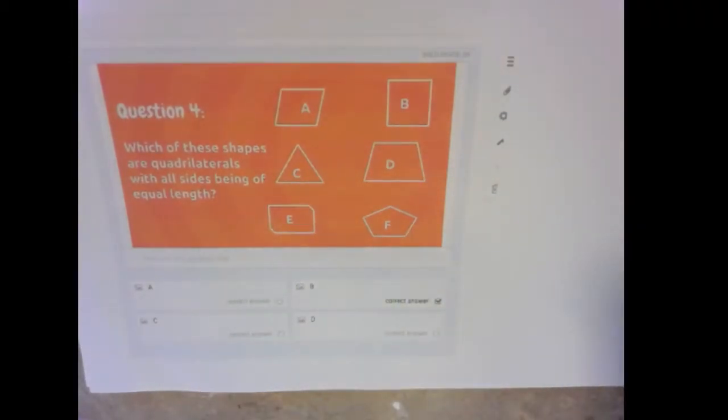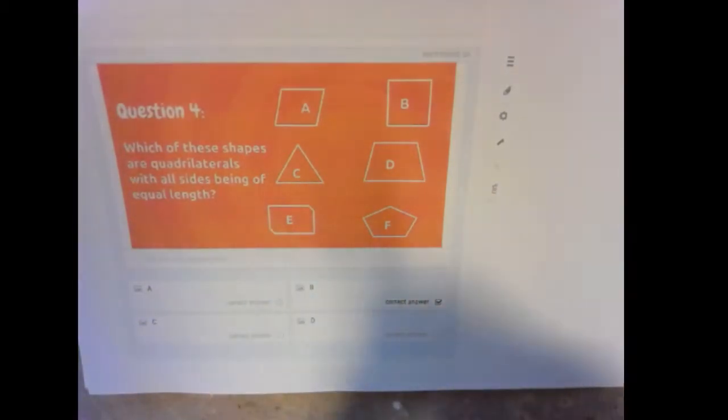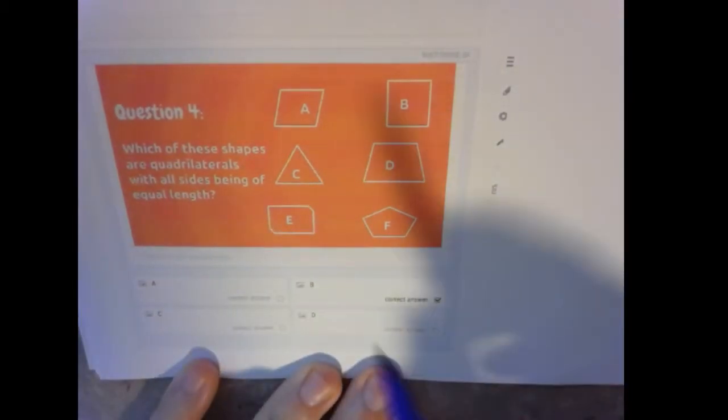And finally, which of these shapes are quadrilaterals with all sides being of equal length? Okay, so where were our quadrilaterals?